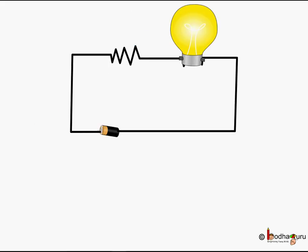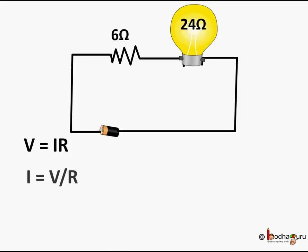Now let us solve some numericals. Say we are trying to light a bulb with a 6 volt cell. If the resistance of the bulb is 24 ohms and another resistance in the circuit is 6 ohms, can you tell how much current it will draw from the cell? The 24 ohm and 6 ohm resistors are in series, so the total resistance will be the sum of them, which is equal to 24 plus 6, which is equal to 30 ohms.